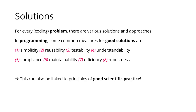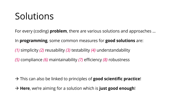These principles can also be linked to principles of good scientific practice. If you are building code for a research project, criteria like understandability and replicability become important. The solution we are building here for the pizza problem is going to be just good enough — we are not following any standards, and we are building a solution that just works. It's definitely not the best or most elegant solution, but we're going to build a very simple solution that teaches you one or two things about how to approach coding problems in general.